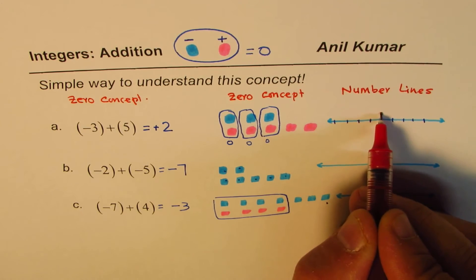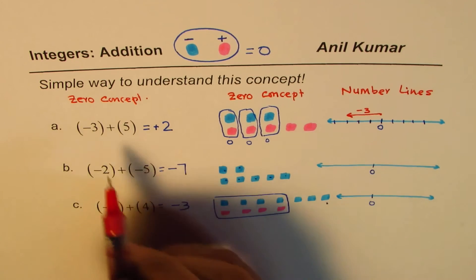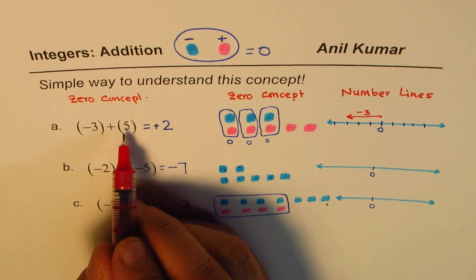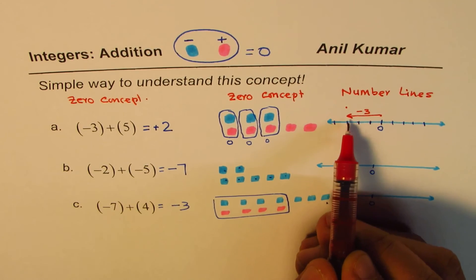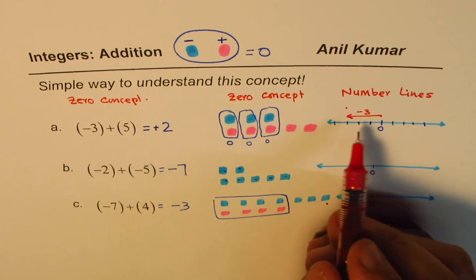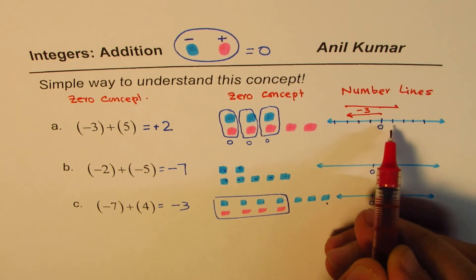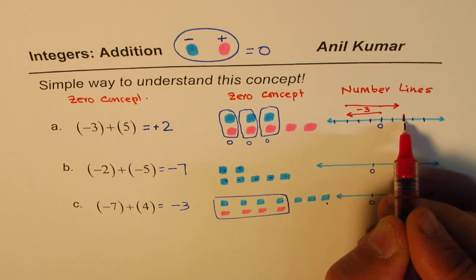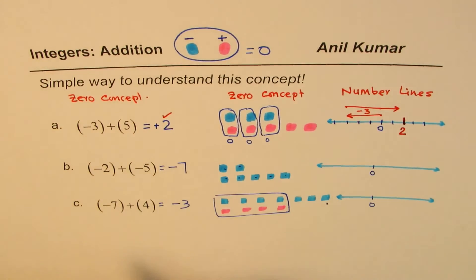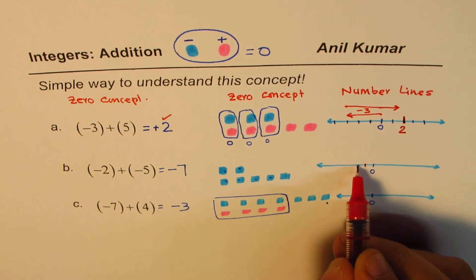From zero, minus three means we go three units to the left to reach minus three. Then plus five means from minus three we move five units to the right — three steps and then two more — and we reach positive two. So minus three plus five equals two on the number line.